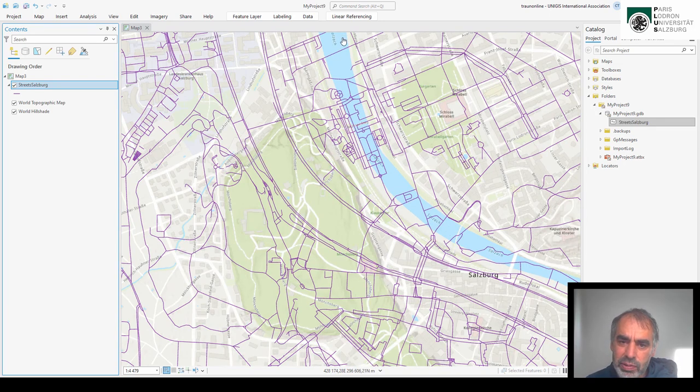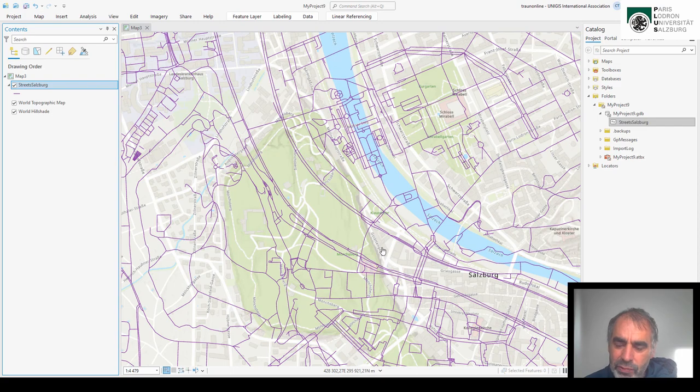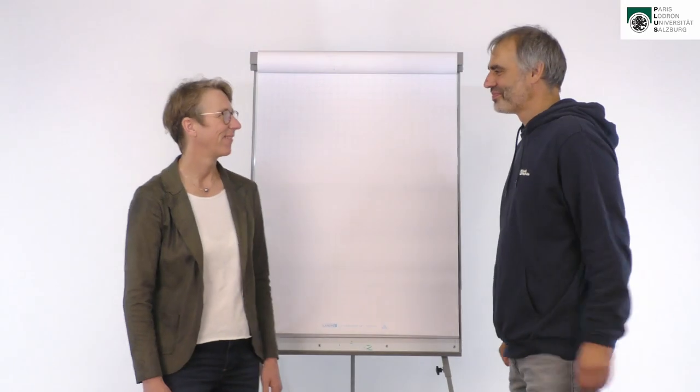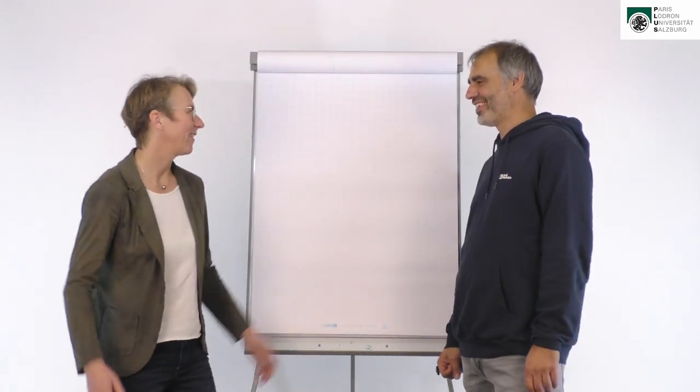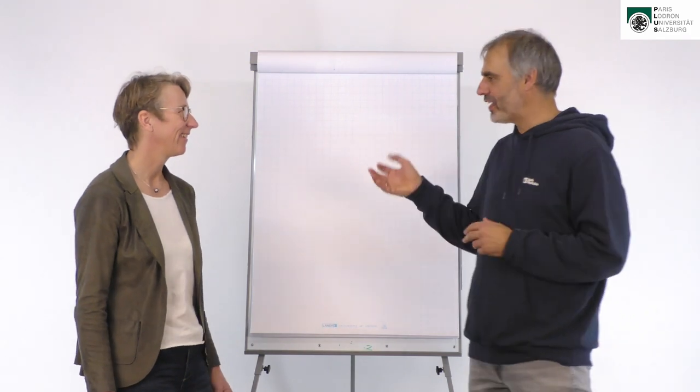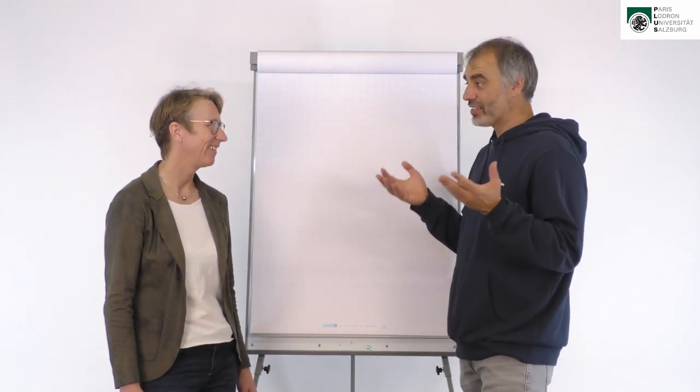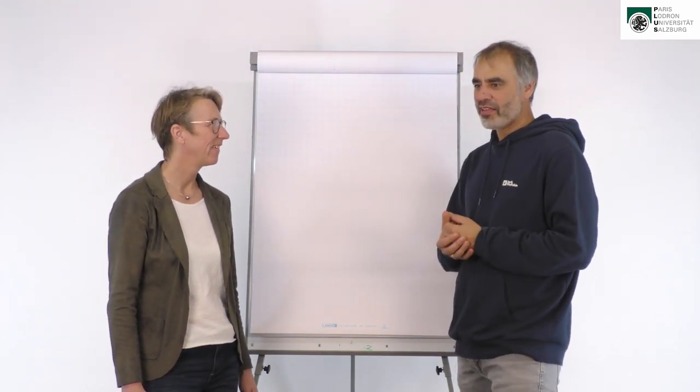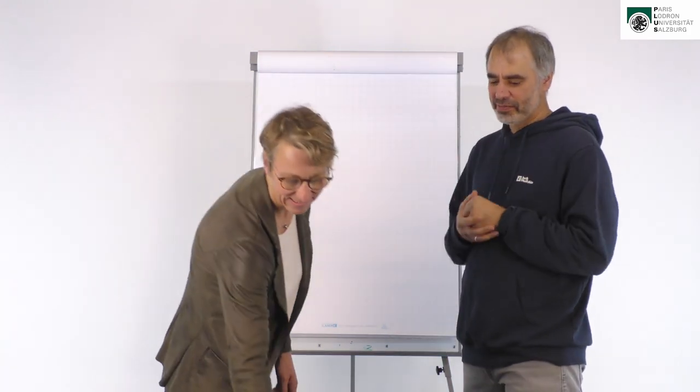You see the river here in the base map, the Salzach river, and this is the Salzach river in the street network and there is obviously a problem. Many people would say that's a projection problem, oh the projection doesn't fit. But in reality it's not a projection problem, but this is a problem of different so-called geodetic datums.